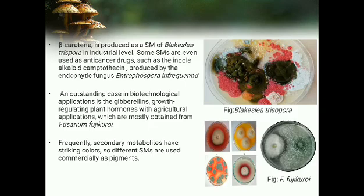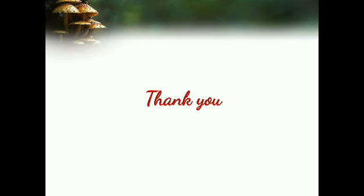Some fungi provide beta-carotene at an industrial level for the production of vitamin A. This fungi provides gibberellin, which is a plant growth hormone used for agricultural purposes. Some fungi have bright colors and are thus used for their secondary metabolites to produce pigments and colors at an industrial level.